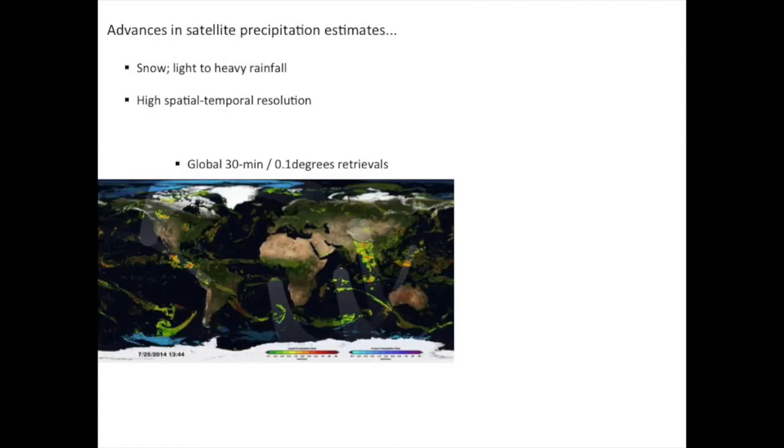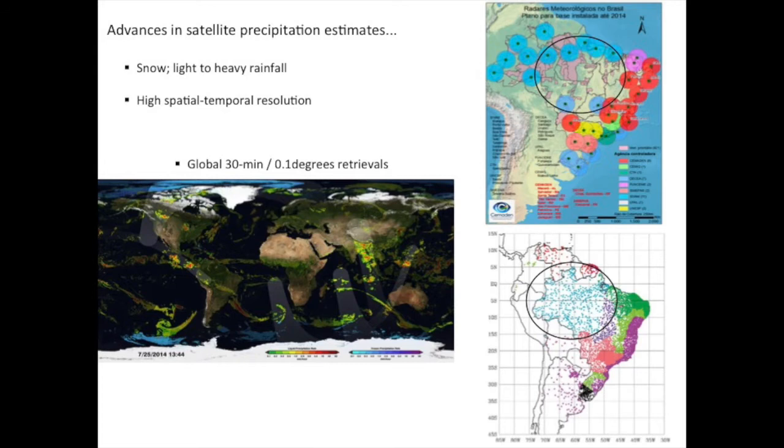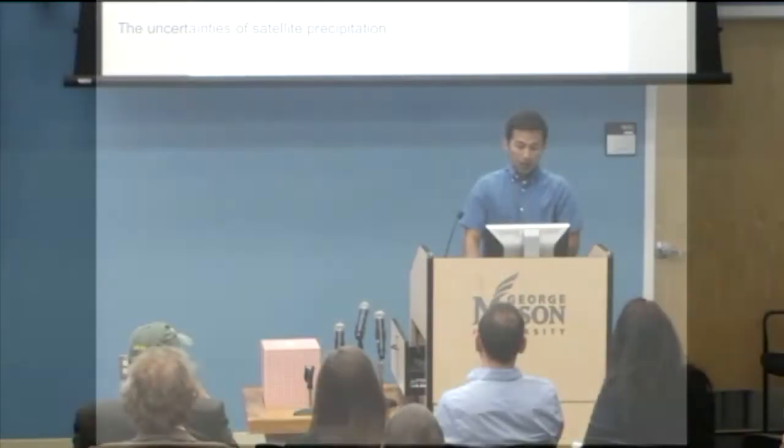Such high resolution global retrievals are really relevant for regions where there is no good coverage of radar and rain gauges, specifically in my country Brazil, in the Amazon for example, where the only way to understand and monitor precipitation in such areas is by satellite.